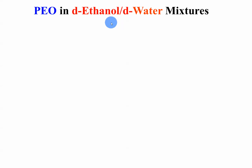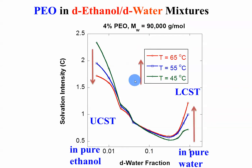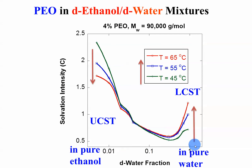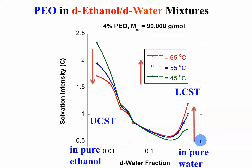Polyethylene oxide in ethanol-water mixtures. In pure ethanol, we see upper critical solution temperature — phase separation occurs upon cooling. If you heat up, the intensity goes down, going towards the one-phase region. While in pure water, for LCST, if you heat up the intensity goes up. So in ethanol the one-phase region is at low temperature while in water the one-phase region is at high temperature.